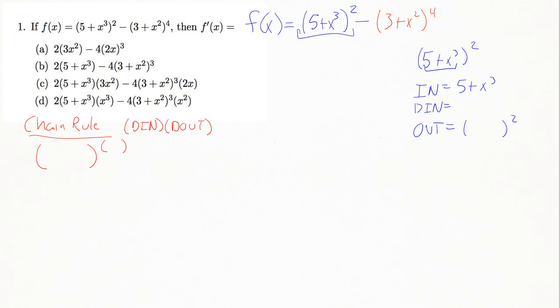the derivative of 5, a constant, just goes away. And then the x cubed, the 3 comes down, and then we subtract 1 from the power, so we get 3x squared. On the d out, the d out on this is really just a big power rule. I'm bringing that 2 down in front. I would leave all the stuff alone on the inside and then subtract 1 from the power.